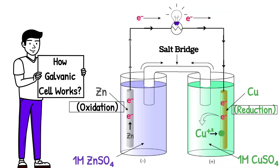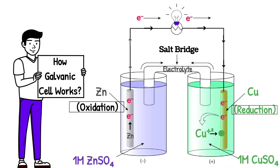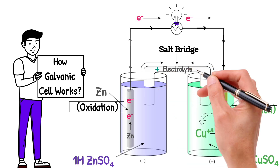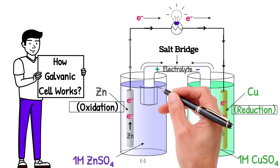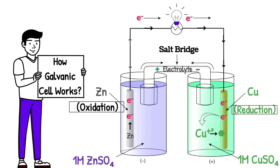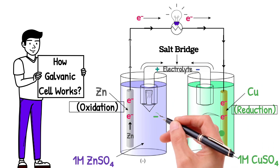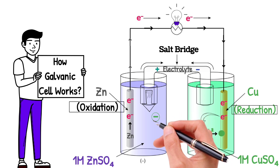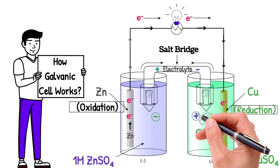The salt bridge is a U-shaped glass tube containing a saturated solution of a strong electrolyte with positive and negative ions supported in a jelly-type material. The ends of the U-tube are sealed with a porous material like glass wool. The function of the salt bridge is to maintain the balance of ions and keep the solution on both sides neutral. It allows ions to flow between the two half cells, enabling the cell to continue producing an electrical current.